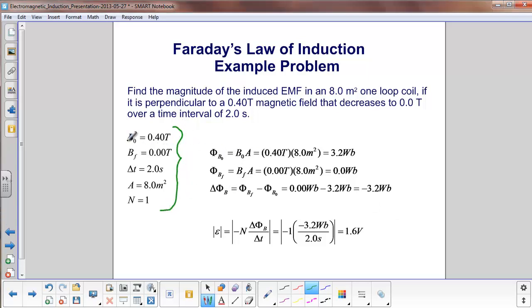So we're told that we have initial, or B sub-0 magnetic field of 0.40 tesla, a B final of 0 tesla. Here's the time interval. Here's the cross-sectional area. And the number of loops in this coil is 1. So n is equal to 1.